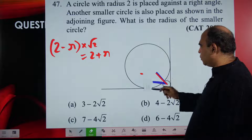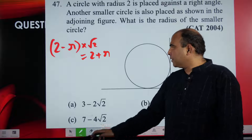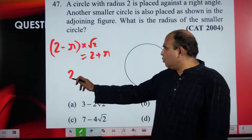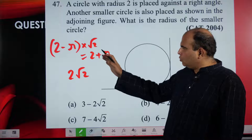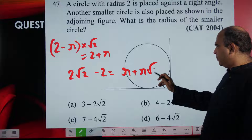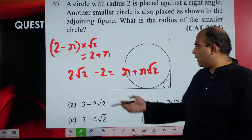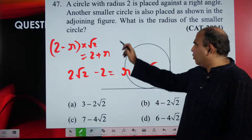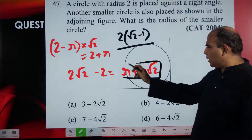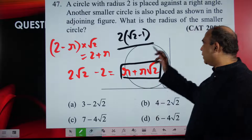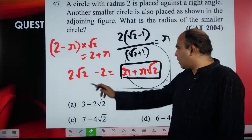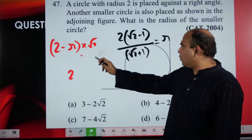Solving the linear equation: take numbers to one side and r to the other. You get 2√2 − 2 = r + r√2. Taking 2 common on the left gives 2(√2 − 1), and r + r√2 = r(1 + √2). So r = 2(√2 − 1) / (√2 + 1).